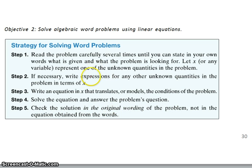Let's review this. Step 1 is your comprehension of the problem, and you label all of the quantities. Step 2, if you have any unknown quantities or expressions, you need to express that as well. Step 3, write the equation in whatever variable we're using. We have consistently used X. Step 4, solve the equation and answer the problem's question. Typically, we want to answer in a complete sentence. Then check our solution according to the original wording.